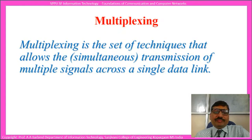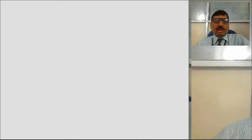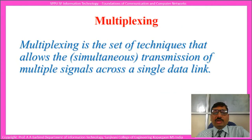So first of all, what is multiplexing? Multiplexing is a set of techniques that allows the simultaneous transmission of multiple signals across a single data link. In digital electronics you might have studied the multiplexer, which combines multiple inputs into a single output. So a similar kind of thing you can expect in this particular multiplexing. Here you have different signals to be transmitted or to be sent from the transmitter to the receiver.